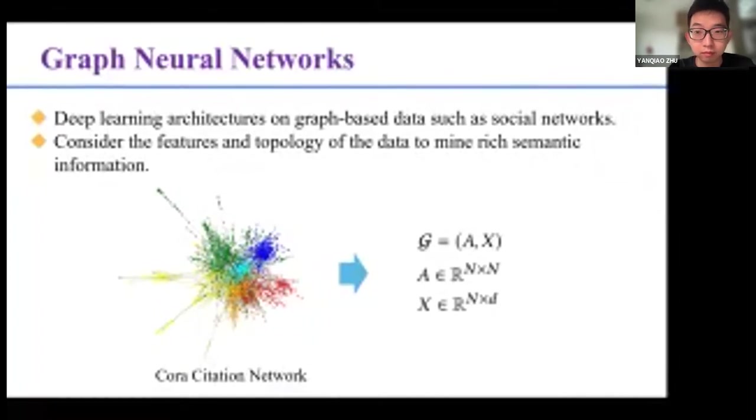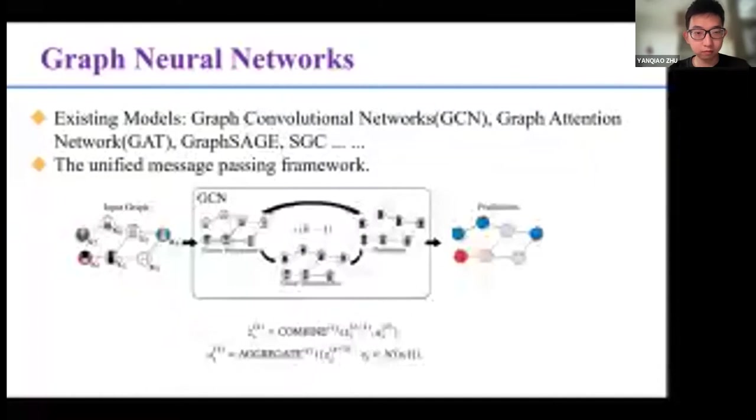For example, the Citation Network Cora would have the adjacency matrix A and the feature of dimension D as X. The existing representative works such as GCN, GAT, and GraphSage have greatly influenced the research of graph learning, and almost all of them follow a unified message passing framework. It learns node representation by aggregating features from neighborhoods and combining with the original node embeddings.